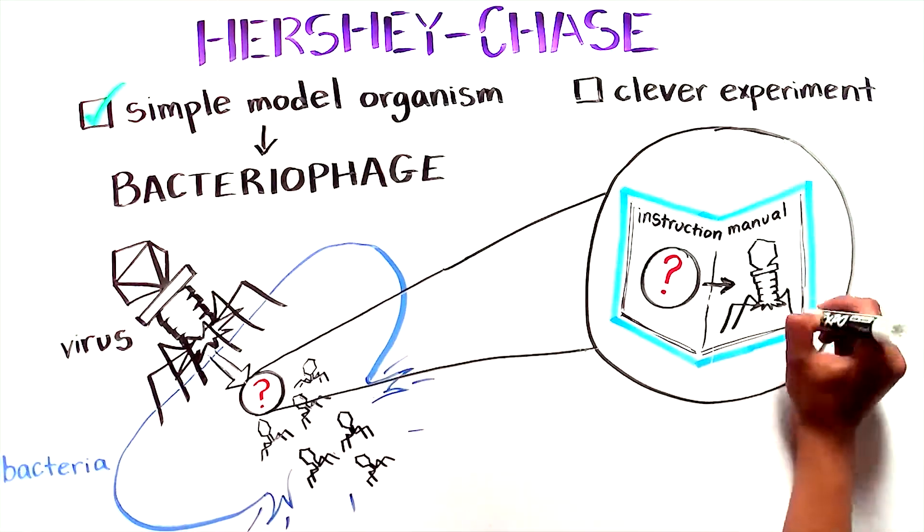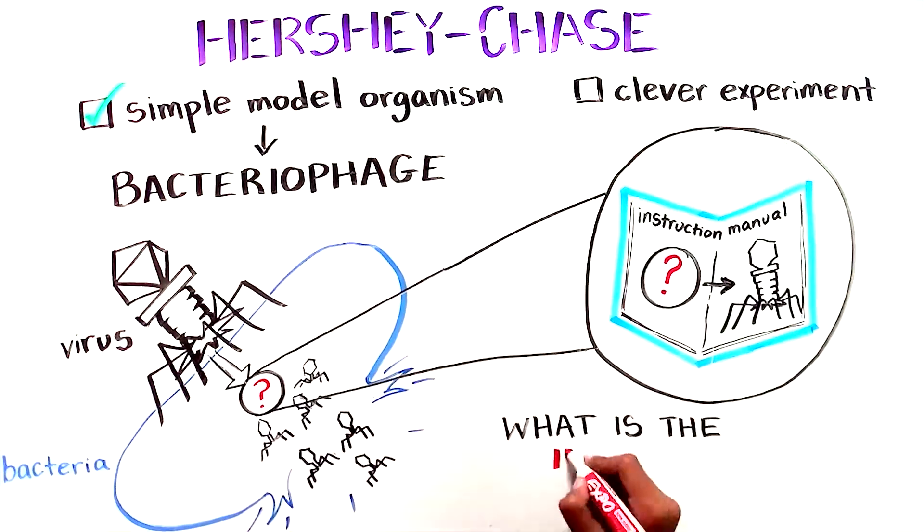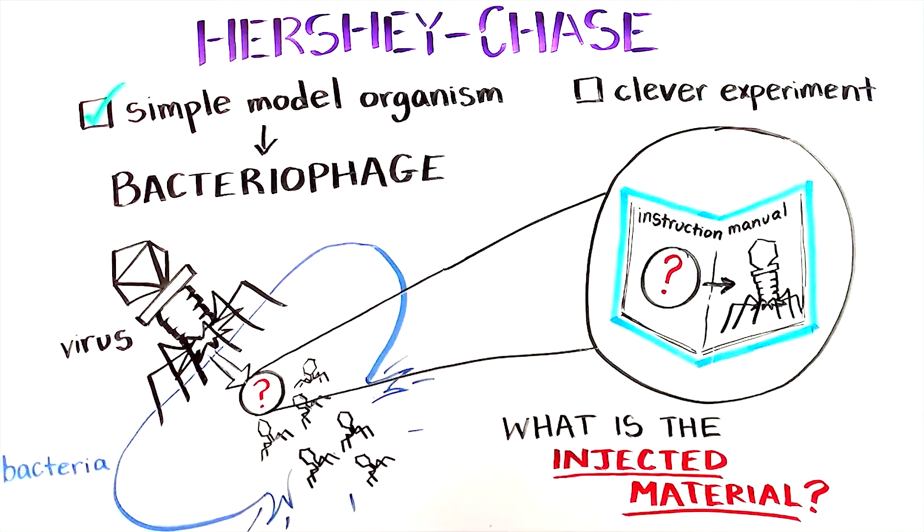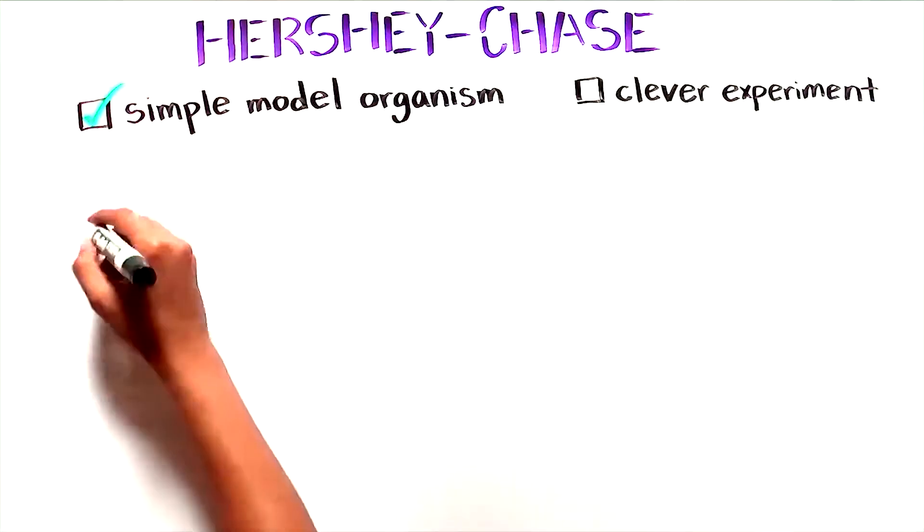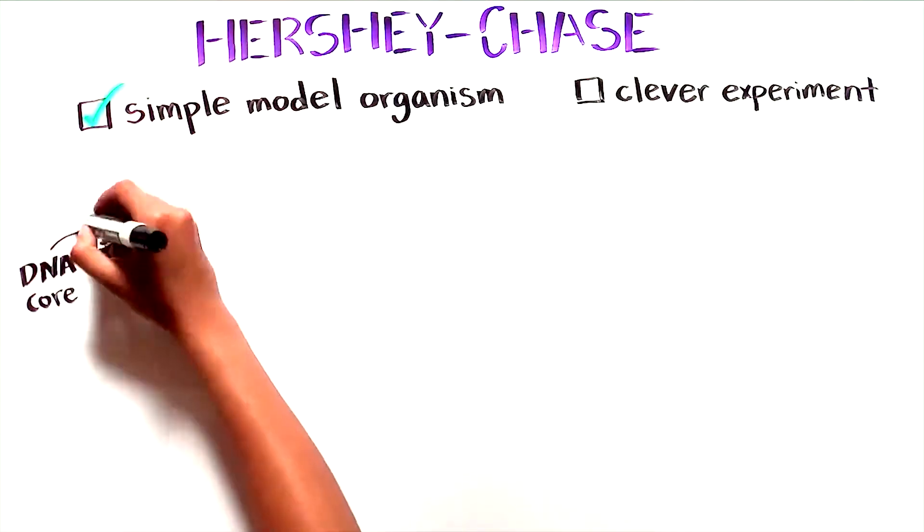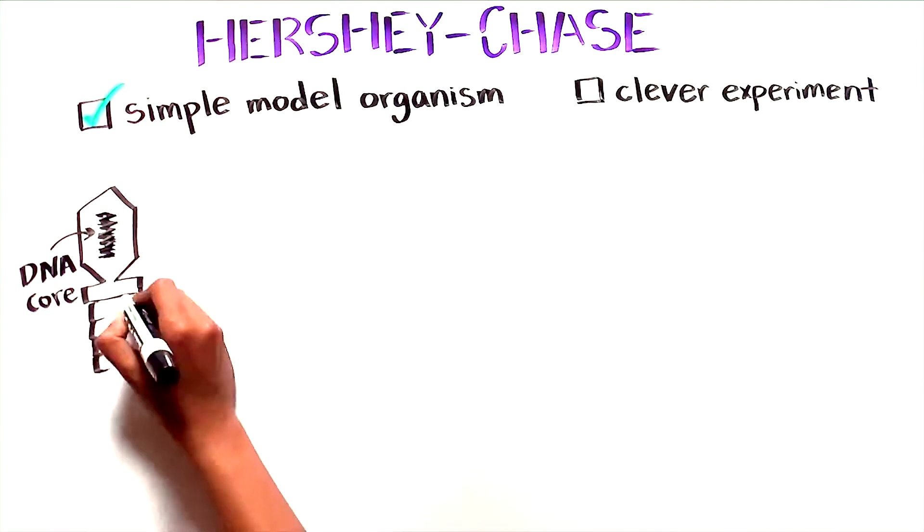But what was this material that the virus injected into its host? The answer to their question might shed light on the nature of heredity for all life on Earth. Viruses consist of two things, a DNA core surrounded by a protein coat.